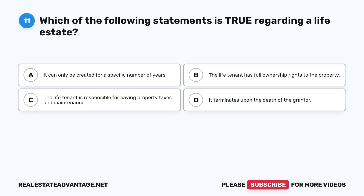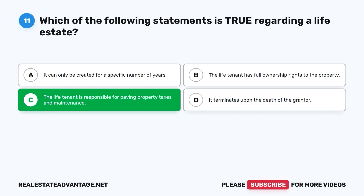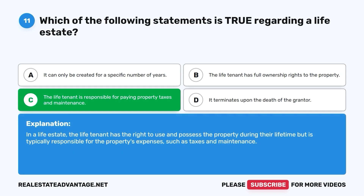Question 11: Which of the following statements is true regarding a life estate? A. It can only be created for a specific number of years. B. The life tenant has full ownership rights to the property. C. The life tenant is responsible for paying property taxes and maintenance. D. It terminates upon the death of the grantor. The correct answer is C. In a life estate, the life tenant has the right to use and possess the property during their lifetime but is typically responsible for the property's expenses, such as taxes and maintenance.